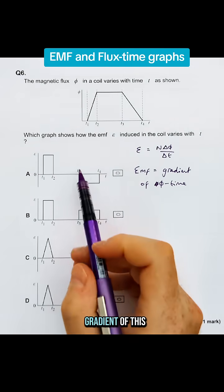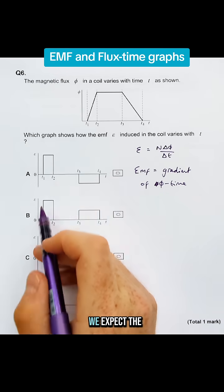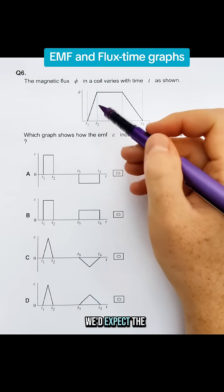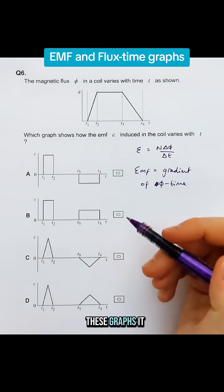So when we look at the gradient of this graph up here, if the gradient is ever zero we'd expect the EMF to be zero. If it's ever a constant or straight line we'd expect the EMF to be a straight line. So let's look at which of these graphs it could be.